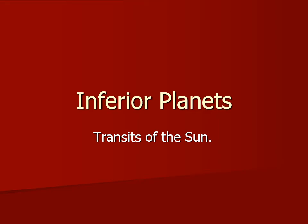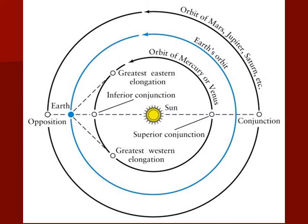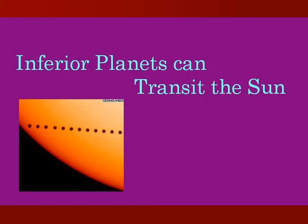Inferior planets are able to do something superior planets cannot do, and that is transit the sun. Inferior planets can never be at opposition, because opposition means they're on the opposite side of the sky from the sun as seen from Earth. An inferior planet could be between the Earth and the sun, and being between the Earth and the sun means it could actually pass directly between the Earth and the sun.